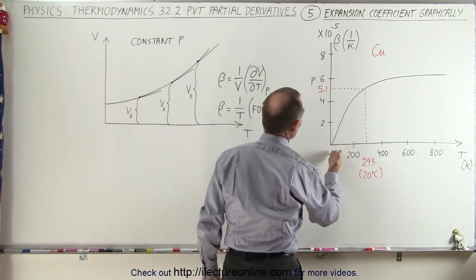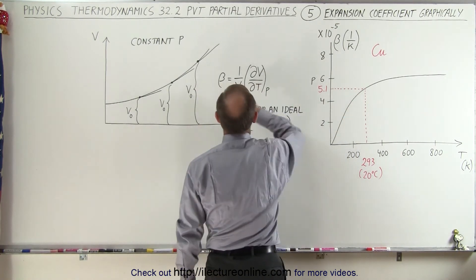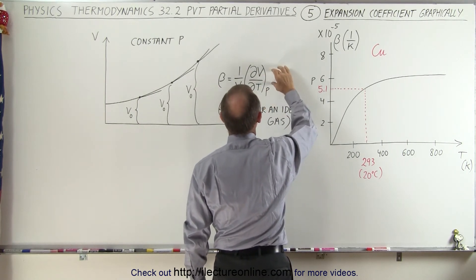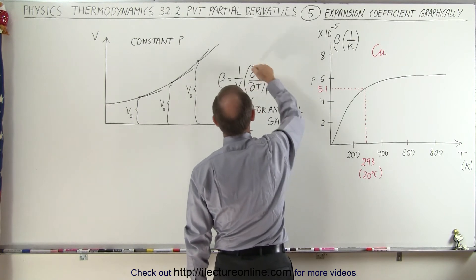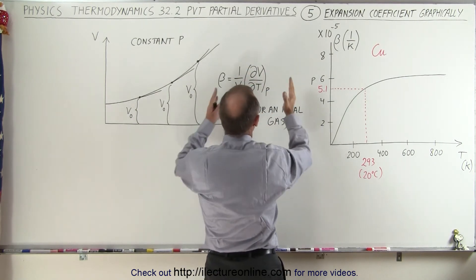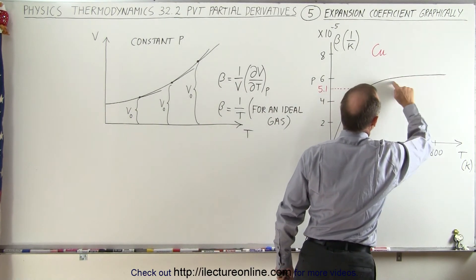Initially, you can see that the change in the volume is predominant. But then after a while, what happens is that the change in the volume with respect to the temperature begins to outperform, or at least catch up to the effect that 1 over the volume has. So when the two are multiplied, you can see that the slope begins to become smaller and smaller.